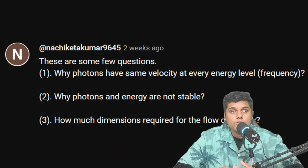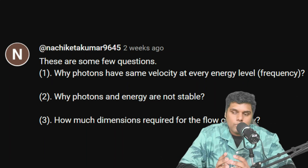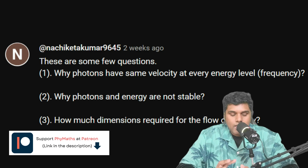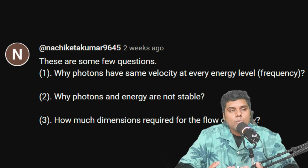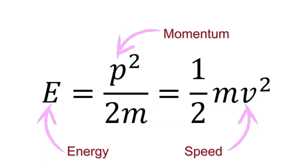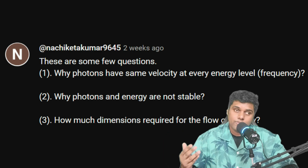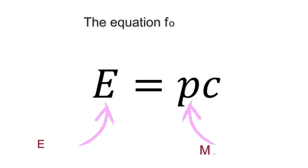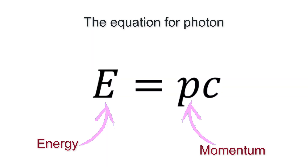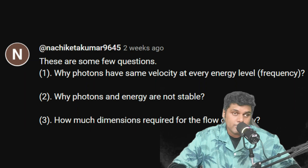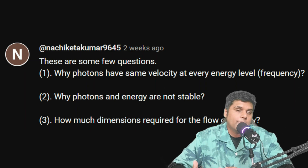Why do photons have the same speed at every energy level? We have the expectation that as energy increases for an object, its speed should increase — this comes from classical experience. We know momentum is related to energy, and as momentum increases, speed increases. But this intuition does not apply to photons. For photons it's still true that as momentum increases, energy increases, but the speed of photons is not directly related to momentum itself.